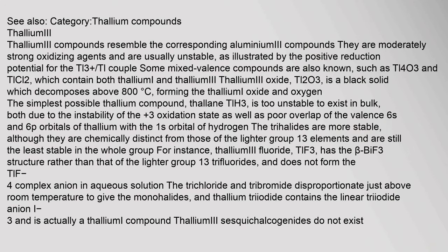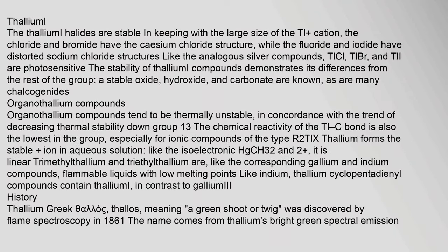Thallium(III) compounds resemble the corresponding aluminum(III) compounds. They are moderately strong oxidizing agents and are usually unstable, as illustrated by the positive reduction potential for the Tl3+/Tl+ couple. Some mixed valence compounds are also known, such as Tl4O3 and TlCl2, which contain both thallium(I) and thallium(III). Thallium(III) oxide, Tl2O3, is a black solid which decomposes above 800°C. The thallium(I) halides are stable; the chloride and bromide have the caesium chloride structure, while the fluoride and iodide have distorted sodium chloride structures. Like the analogous silver compounds, TlCl, TlBr, and TlI are photosensitive.